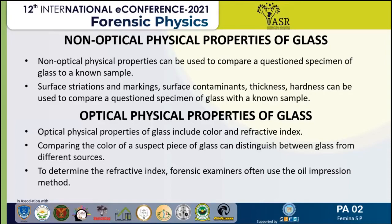Regarding refractive index: the bending of a light beam as it passes from one medium to another is known as refraction. The refractive index is the ratio of the velocity of light in air to the velocity of light in the glass being measured. The refractive index is one of the most commonly measured physical properties in the forensic laboratory because it gives an indication of the composition and the thermal history of the glass. The oil immersion method is used to measure the refractive index of glass.